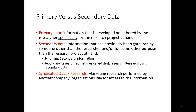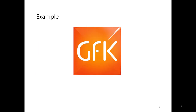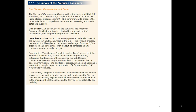A case can be made that syndicated data or syndicated research may be both primary and secondary data at the same time. Let me illustrate this with an example of GFK. GFK is one of the five largest international marketing research companies in the world. One of their most popular and well-known products is called the Survey of the American Consumer. The survey helps you understand the consumption habits of U.S. adults — almost 6,000 products in 550 different product categories are measured, as well as demographic and psychographic information about consumers.